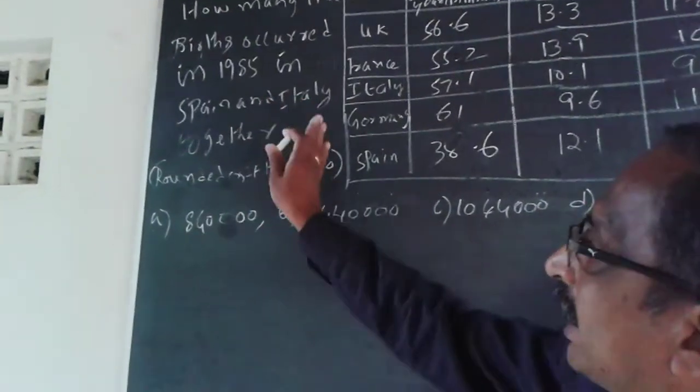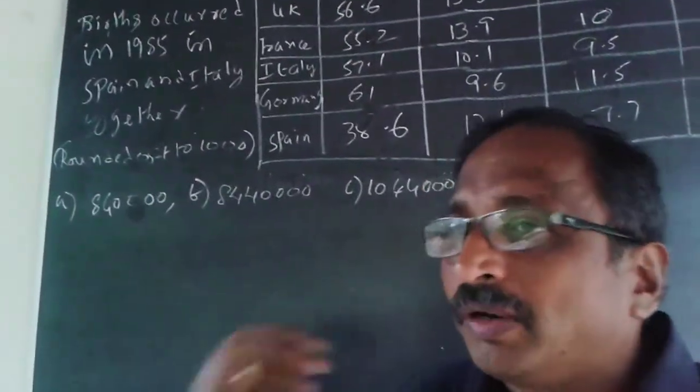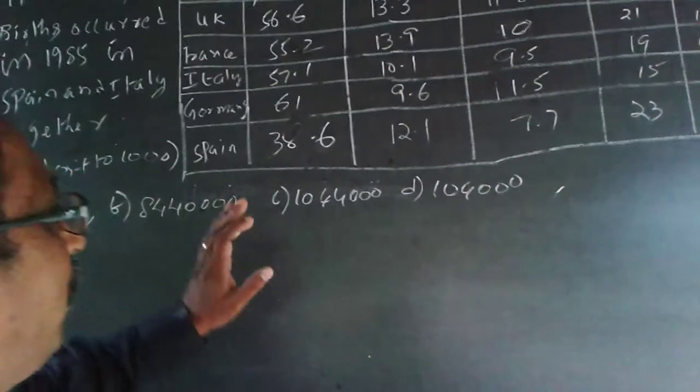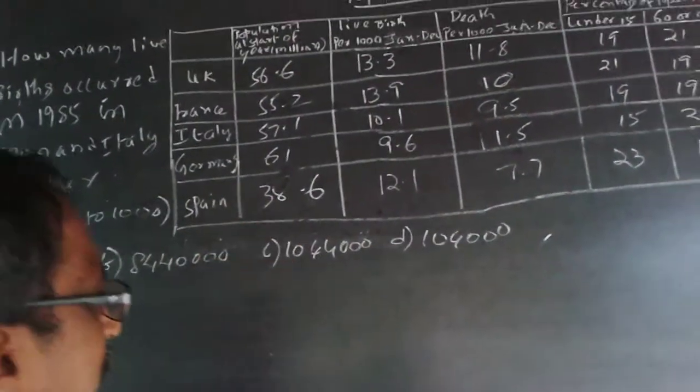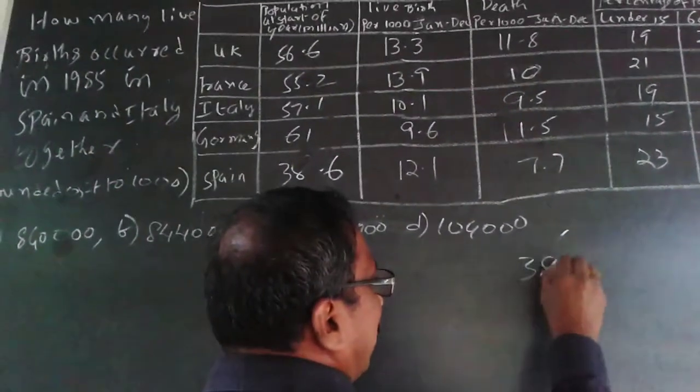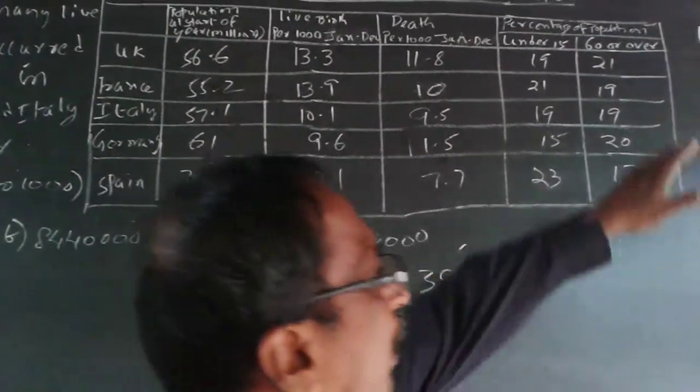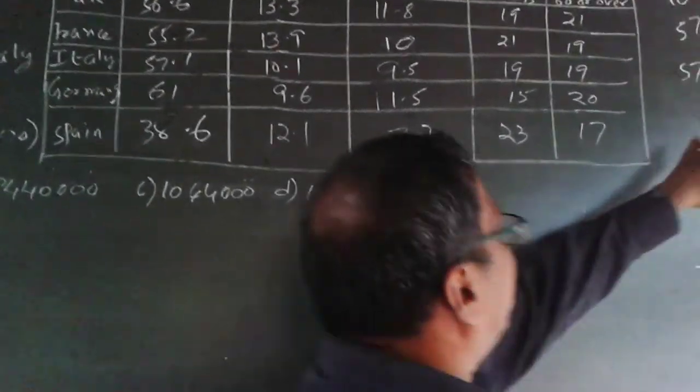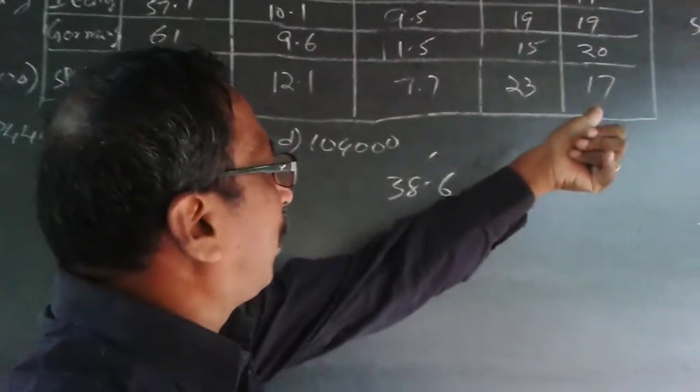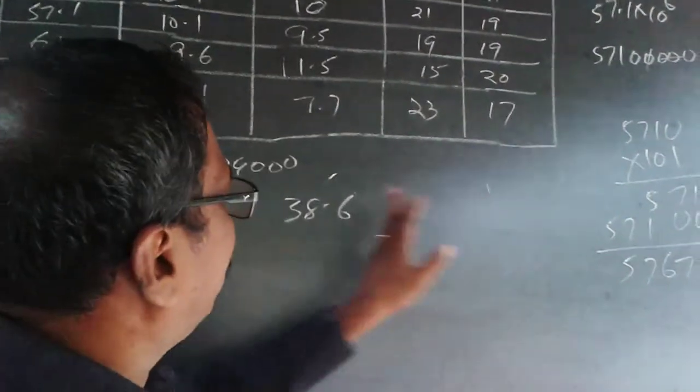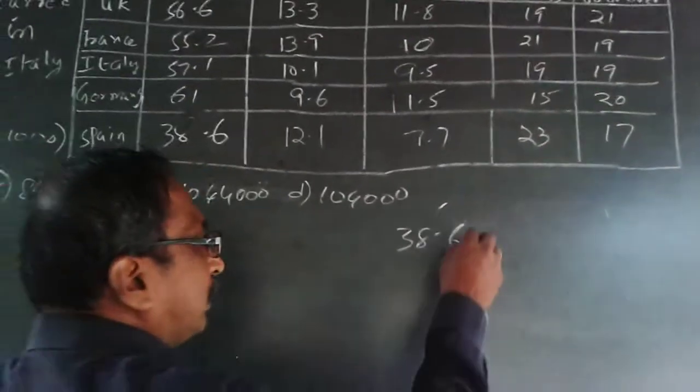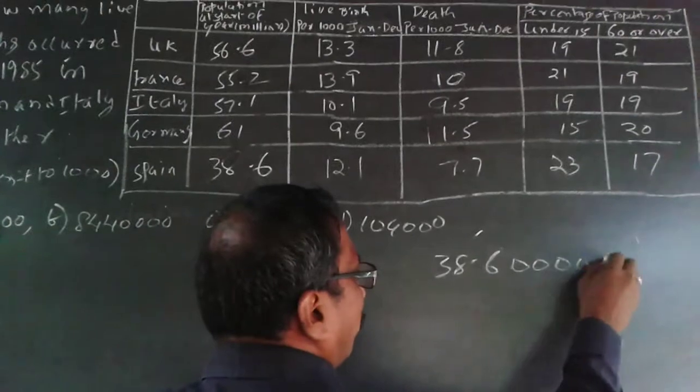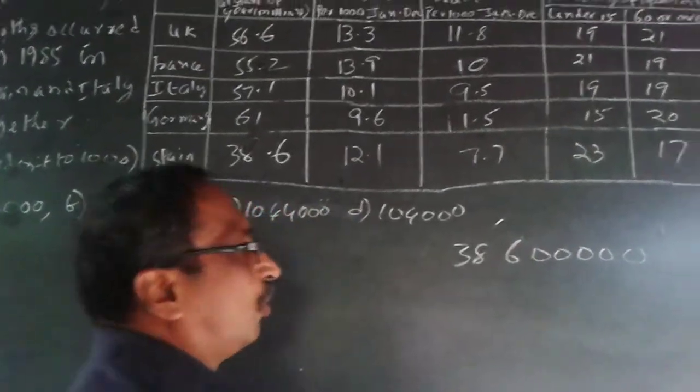Spain is 38.6 million. I am not repeating the whole process, I am just adding five more zeros, removing this decimal. 38.6 × 10⁵.